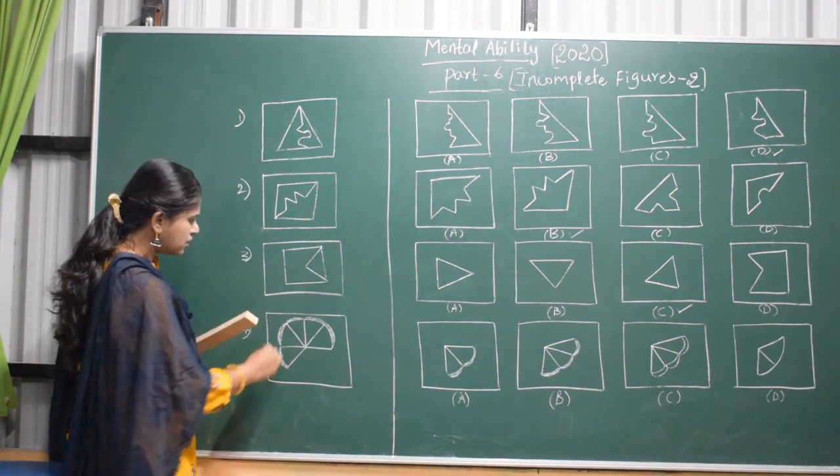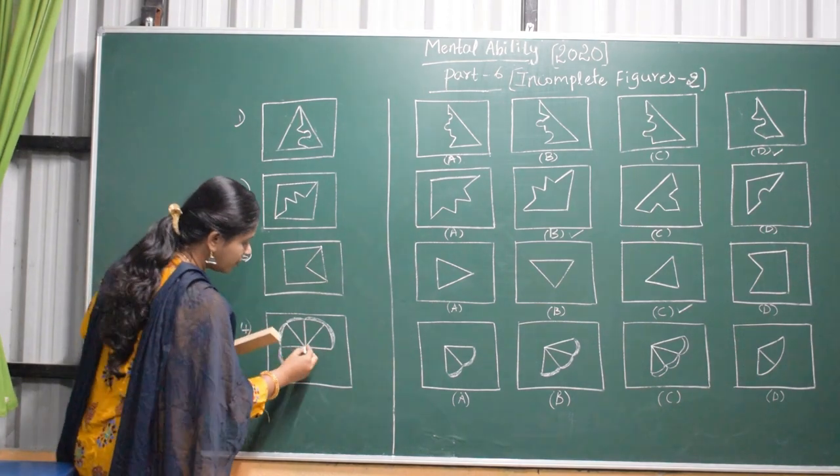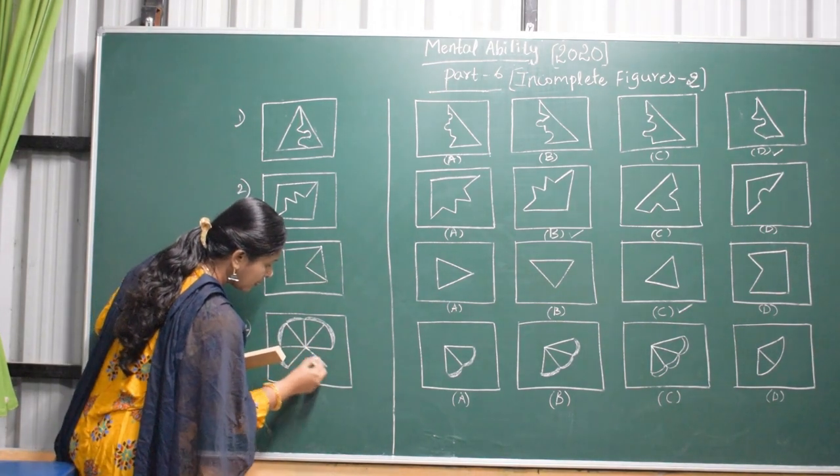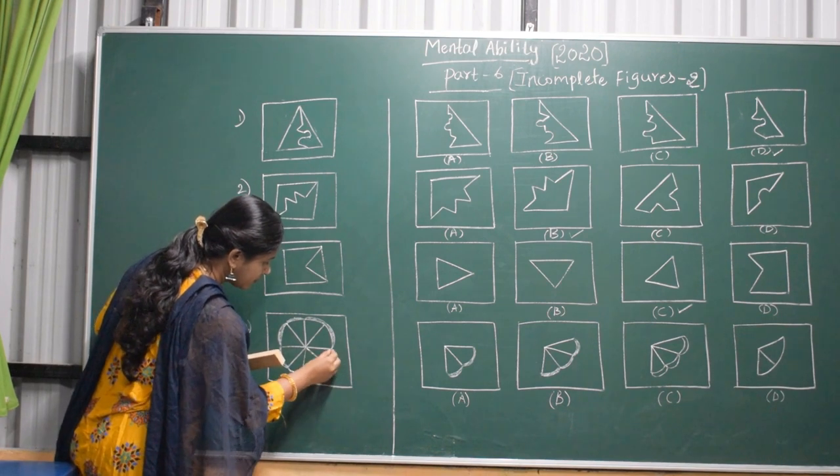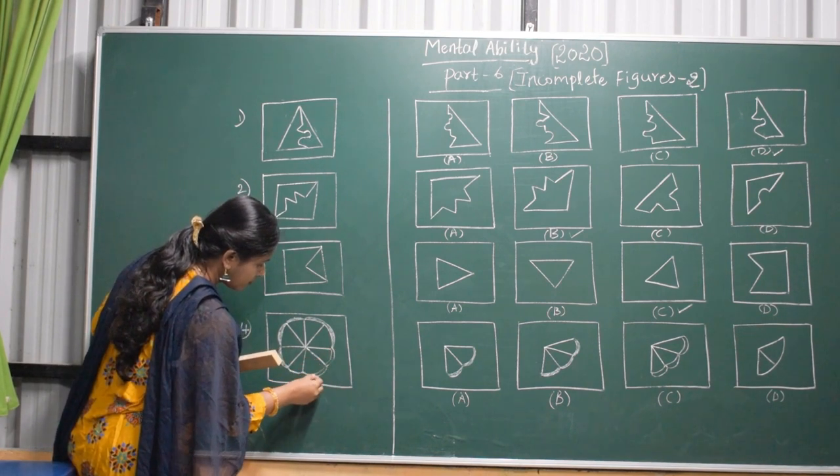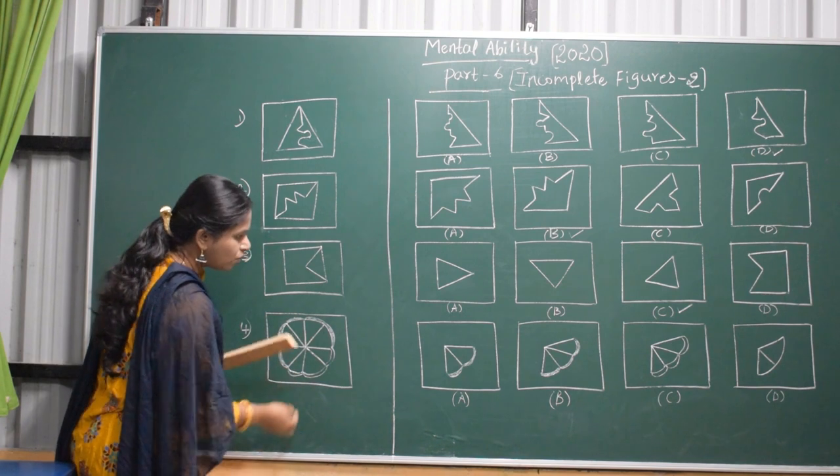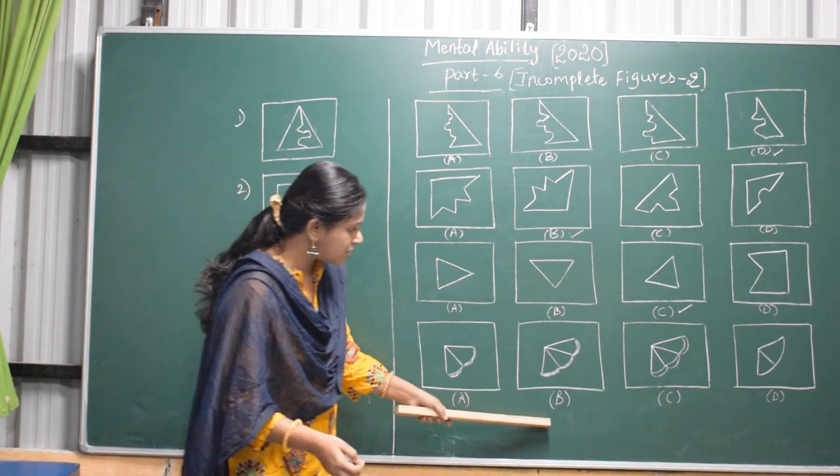Coming to the fourth one. This is a half circle. We want to fill this. Draw like this. We have two answers, B and C.